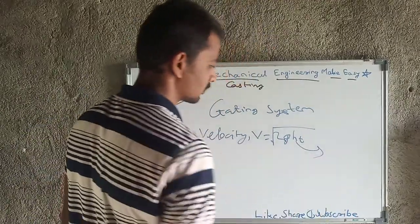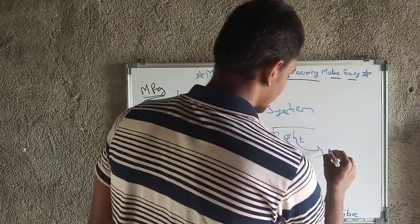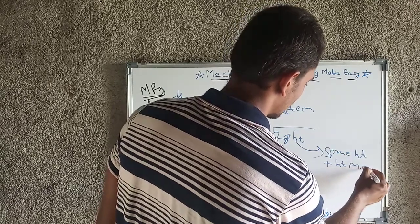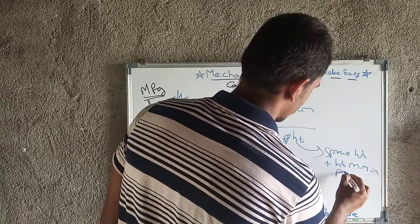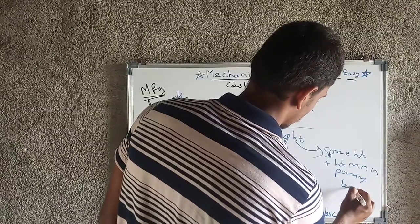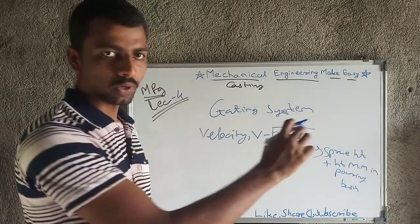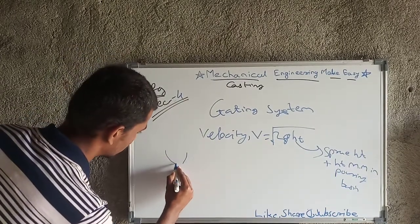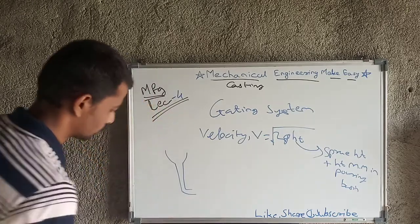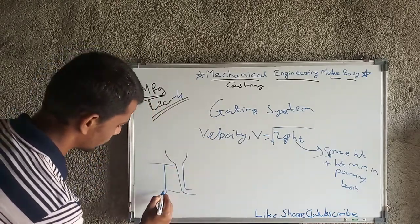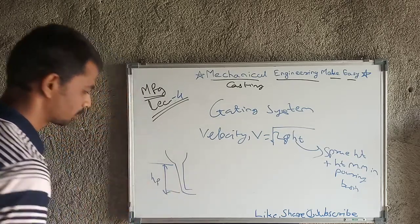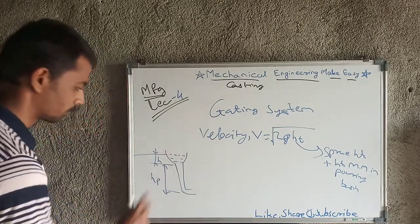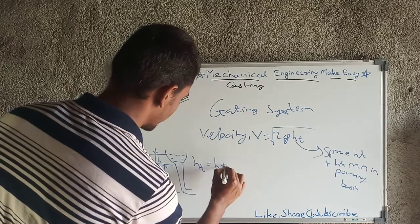Velocity, denoted by v, is equal to the square root of 2g·Ht. Here Ht is the total height, which is the sprue height plus the height of molten metal in the pouring basin. If this is the pouring basin and this is the sprue, then from top to bottom is the sprue height hp, but the molten metal is at a height h above the sprue top, so Ht equals h plus hp.